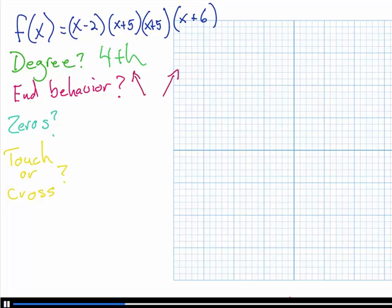The next thing are the zeros. And if we look and we try to find out what the zeros are, we take each factor, once the polynomial function has been factored, and this already is factored, we set each factor equal to zero. So I can see that I'm going to have a zero at 2. I'm going to have a zero at negative 5. I'm going to have another zero at negative 5. And I'm going to have a zero at negative 6. So let me write those down.